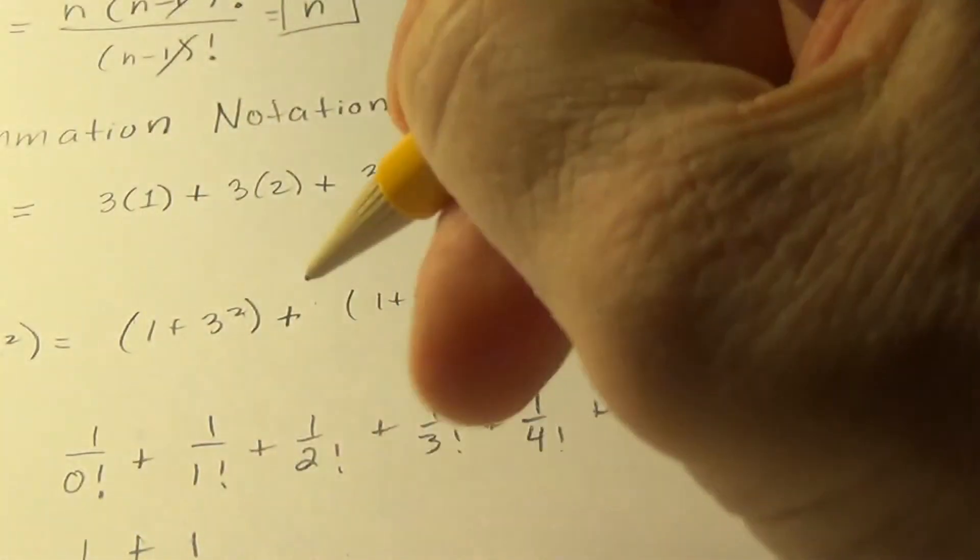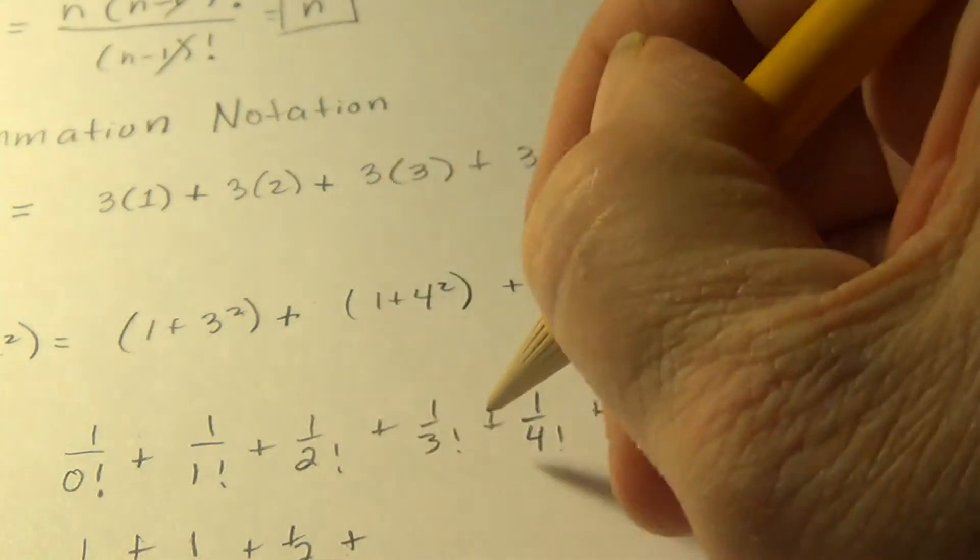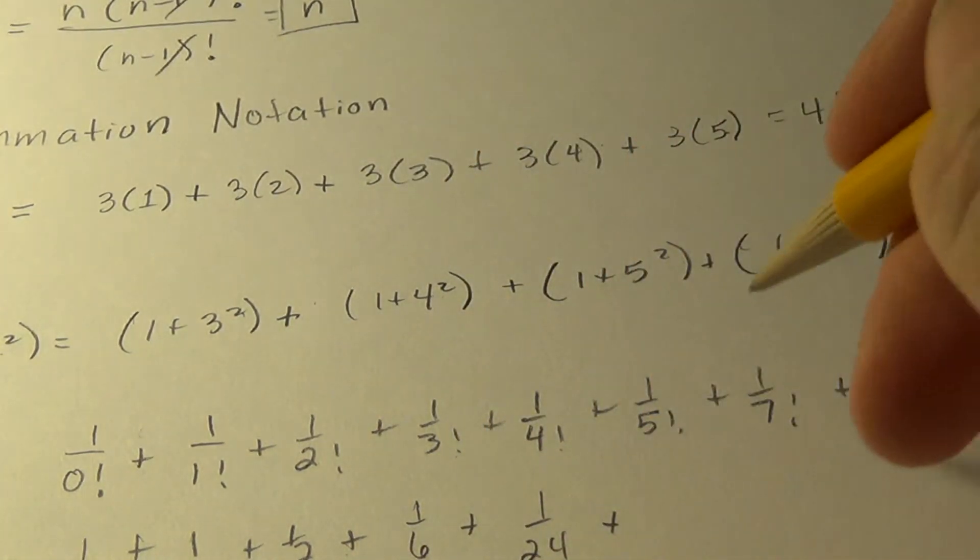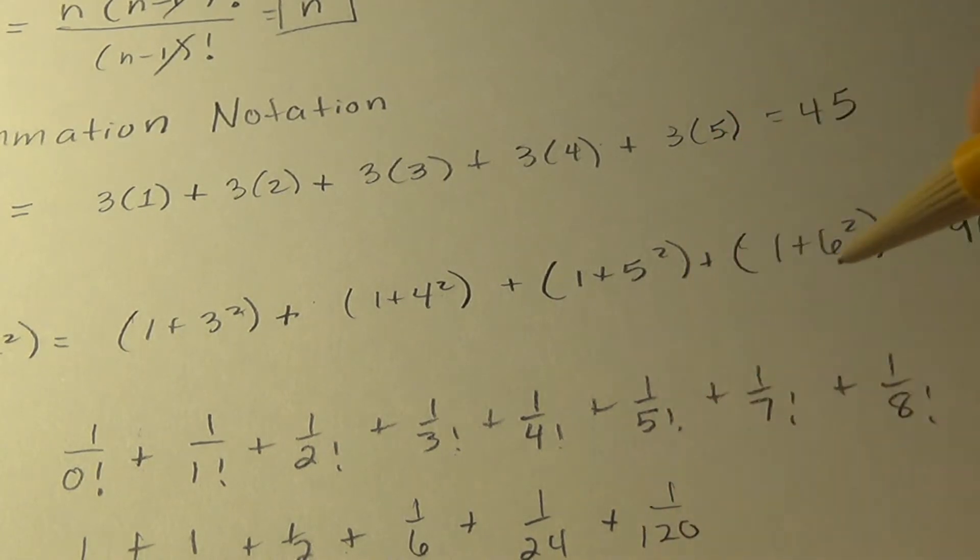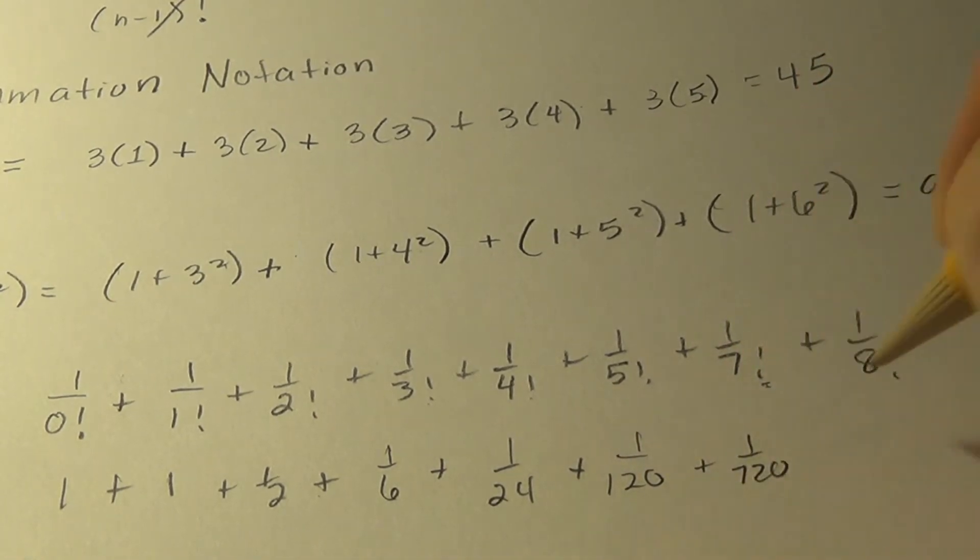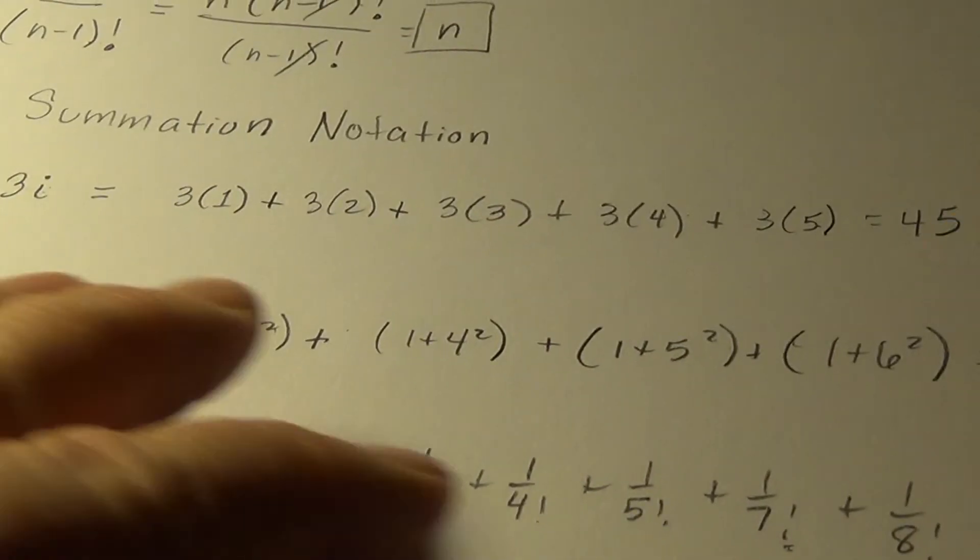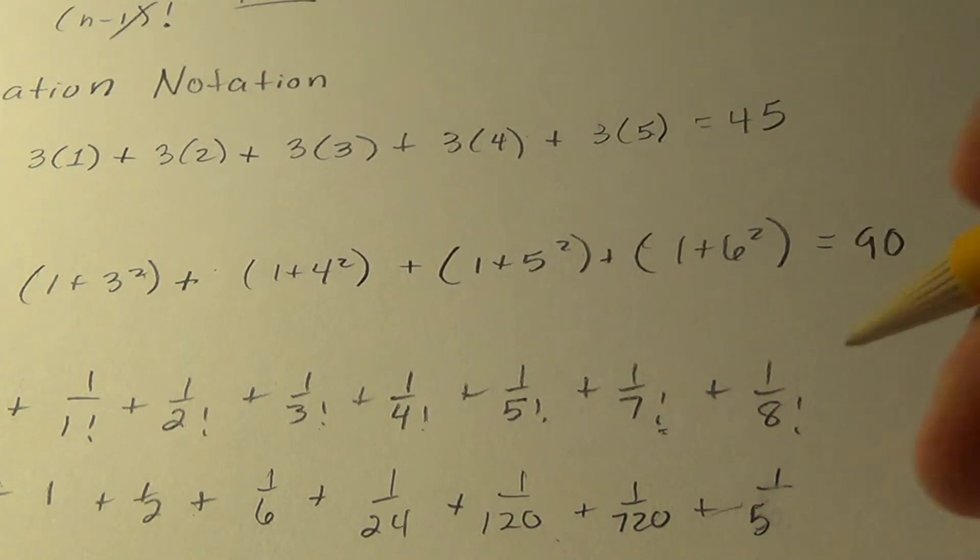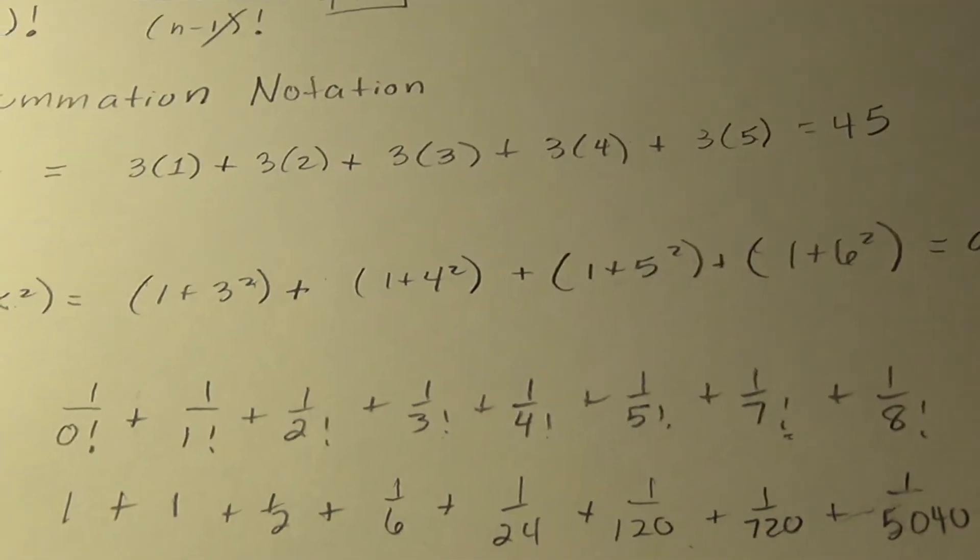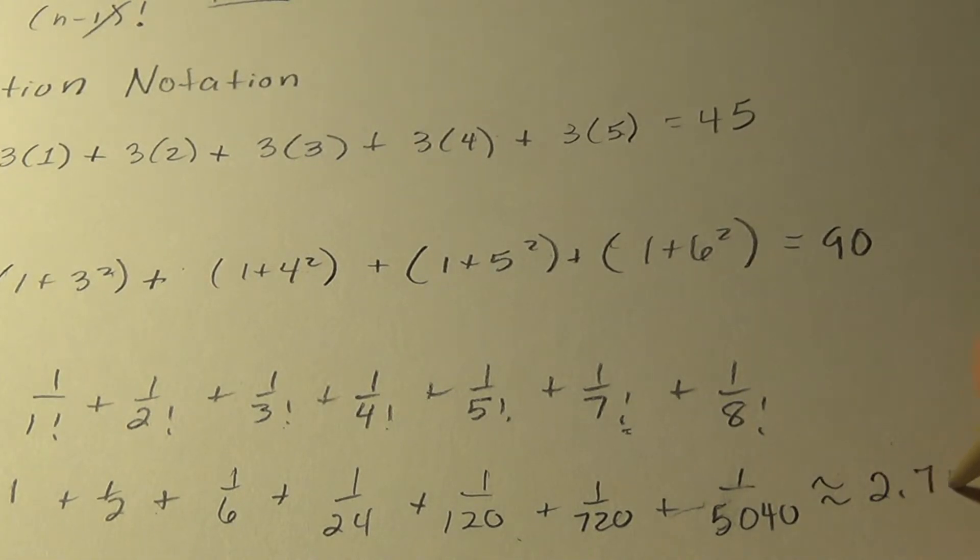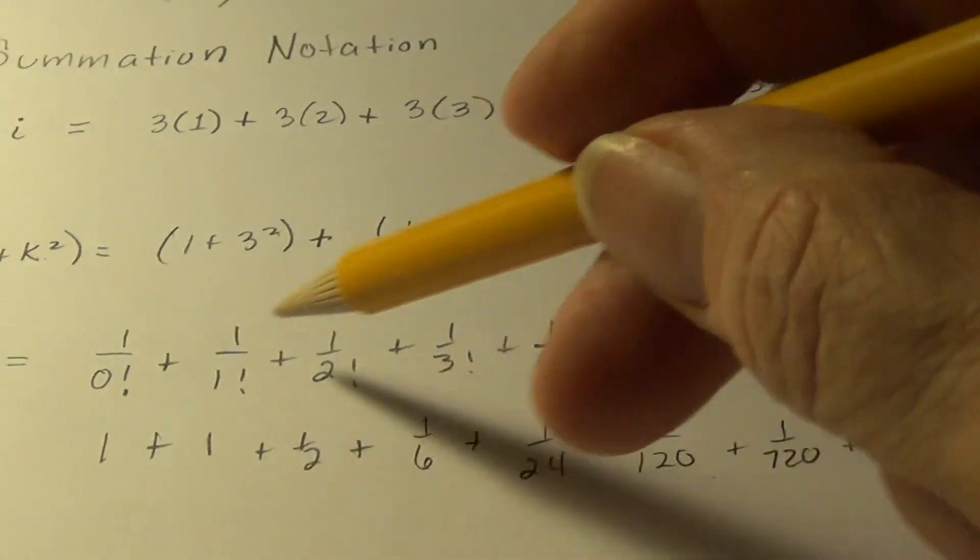We get 1 again. Then a half. Plus, remember 3 times 2 times 1 is a sixth. This is 24. This is 120. This is 720. And this is 50,000... no it's not, it's 4,000. I mean it's 5,000. 5,040, that's what I'm trying to say. So we add all that up. It actually comes to 2.718. Anyone recognize that number?